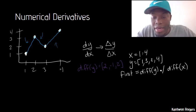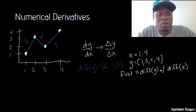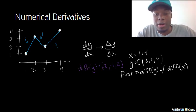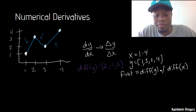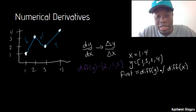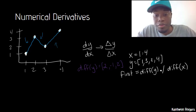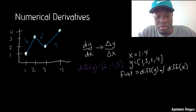So it's taking the change in my y and dividing it by the change in my x. It's very important to note that when you use the diff function, you get back one less number than you started with. So in this case x and y are length 4, but first is length 3. That's important because what if I wanted to take the numerical second derivative — that's just the derivative of the derivative.